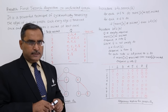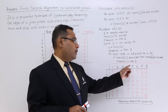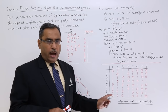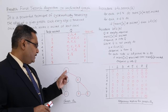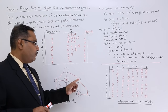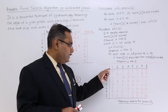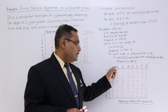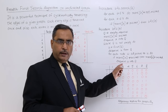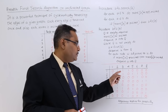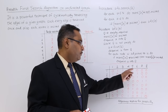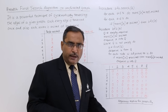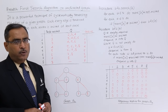In the adjacency matrix, we have n number of columns and n number of rows. Node number 1 is adjacent with 2, 3, and 4. So against columns 2, 3, and 4, I am putting 1, and the rest are 0. In this way, the adjacency matrix has been formed.